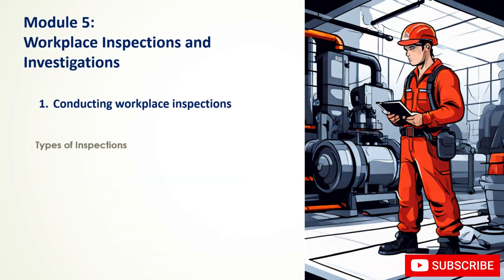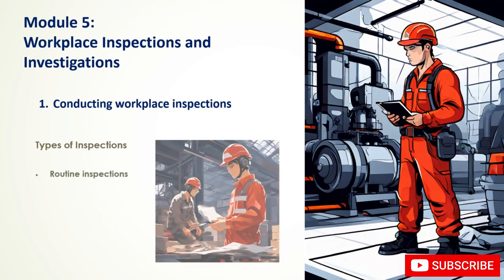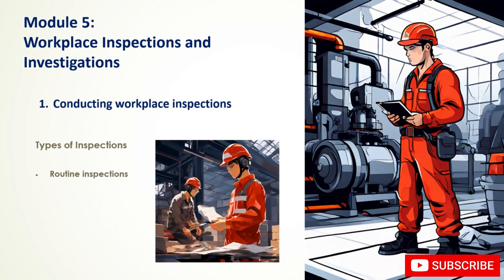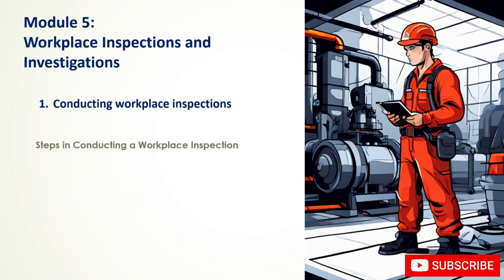Types of inspections include: routine inspections of the entire workplace, focused inspections of specific areas or activities, incident investigations following accidents or near misses, and compliance inspections to ensure adherence to regulations. Steps in conducting a workplace inspection begin with planning: defining the scope, assembling an inspection team with relevant expertise, and developing a checklist.